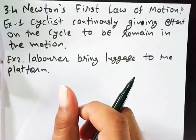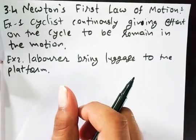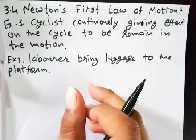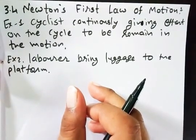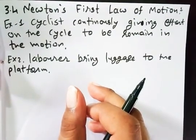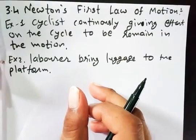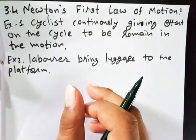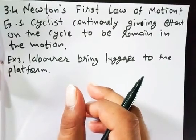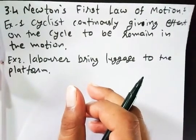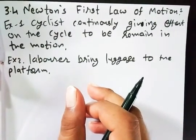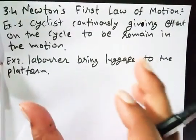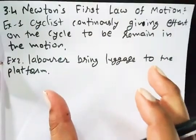If we have to move that cycle continuously, then we have to give continuous force to that object. That is the main importance of force. So there are two aspects here: if a body is at rest and we want to get it in motion, we have to apply force; and if the object is in motion and we want to keep it in motion, we also have to give continuous force.